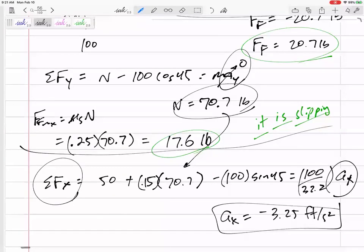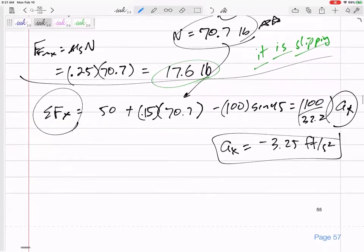So be careful, but many times you can reuse equations you've already used, like this Y equation right here. It still is N minus 100 cos 45, it still is equal to zero, N is equal to 70.7. But my X equation I would redo, now knowing that the force of friction is μk times N.